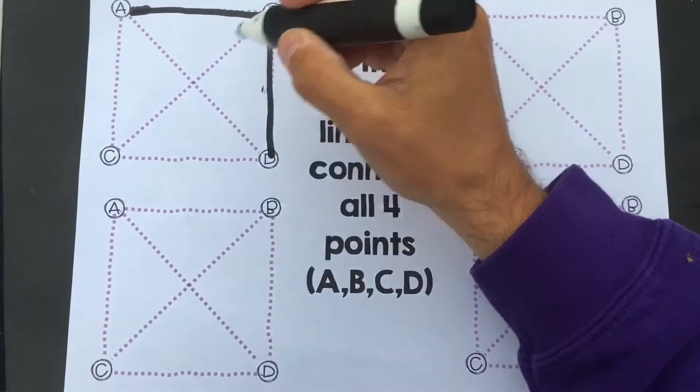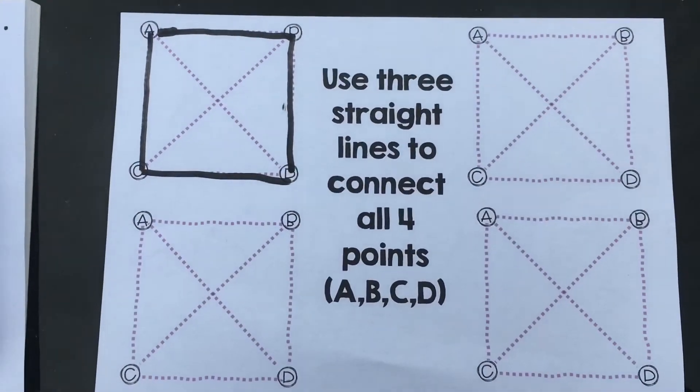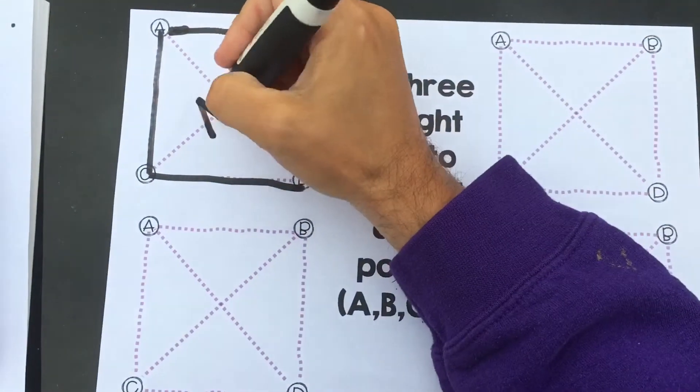So, one, two, three, four. That connects A, B, C, D but that is using four straight lines so that's not allowed. No.